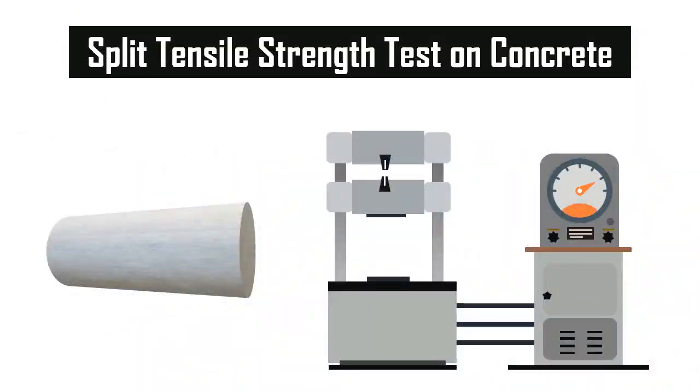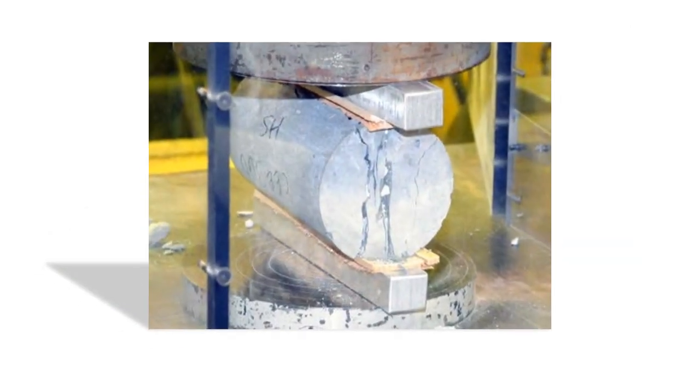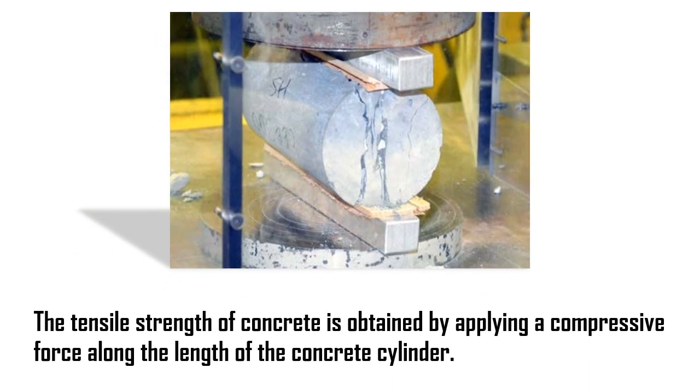Split tensile strength test on concrete. In the split tensile strength test, the tensile strength of concrete is obtained by applying a compressive force along the length of the concrete cylinder.